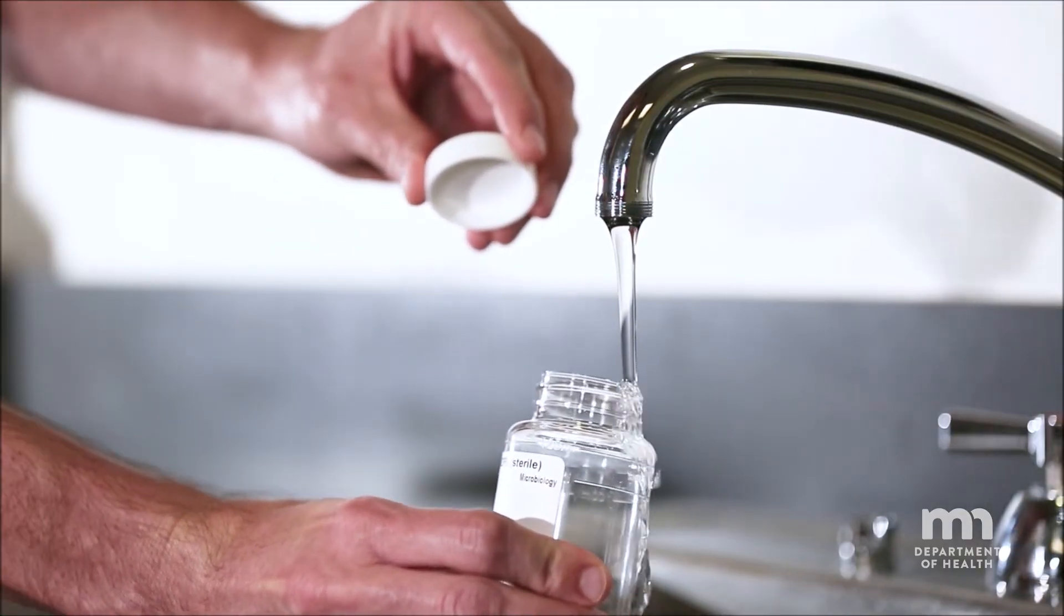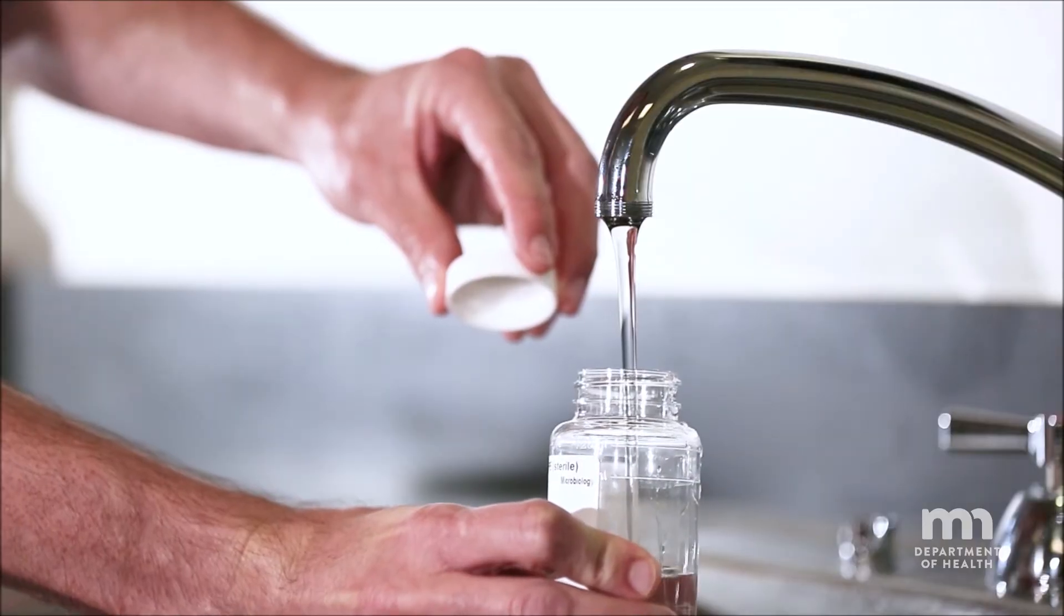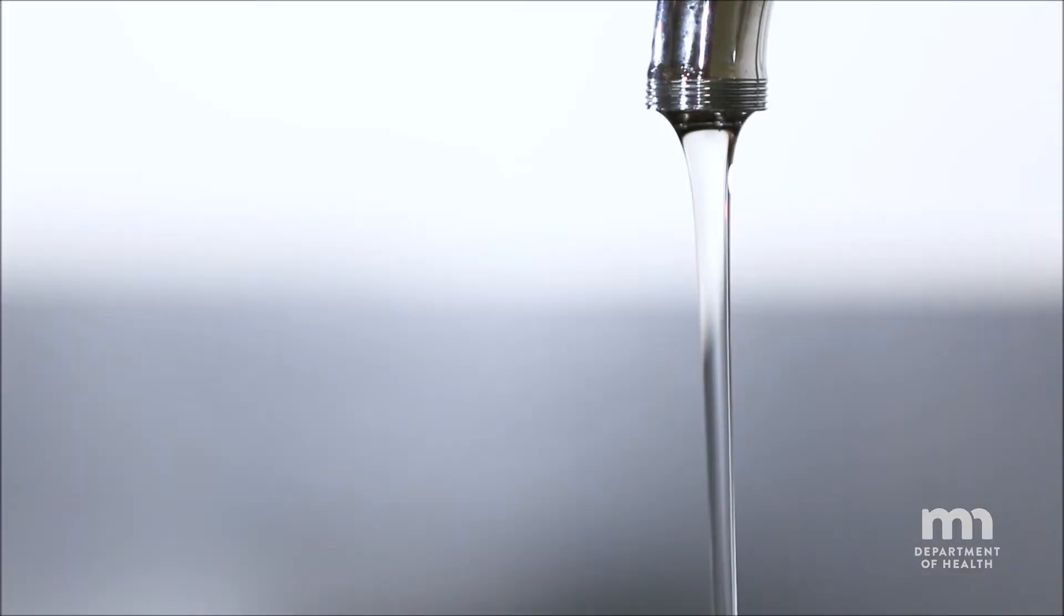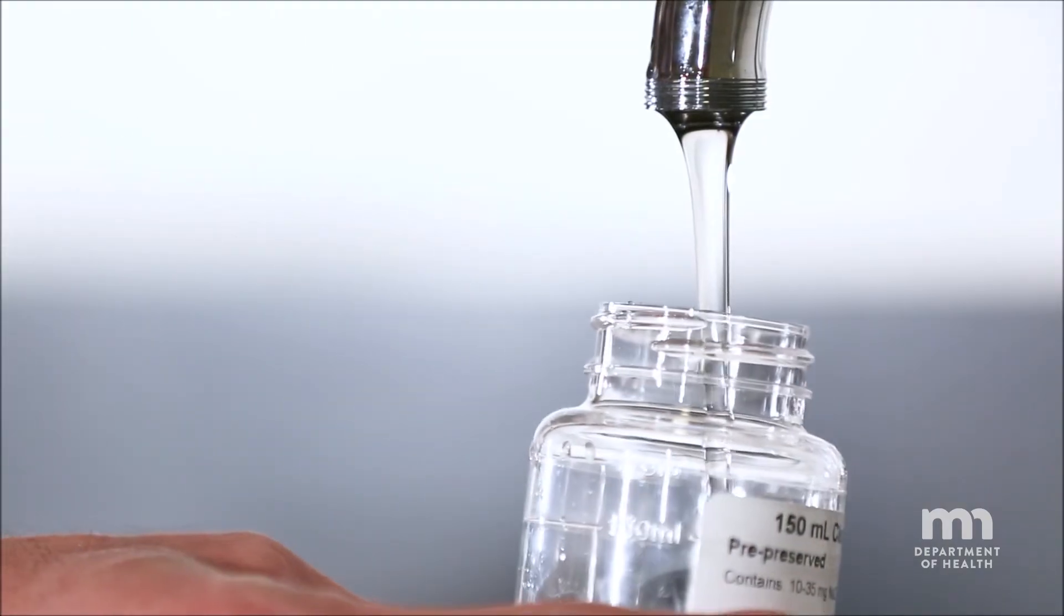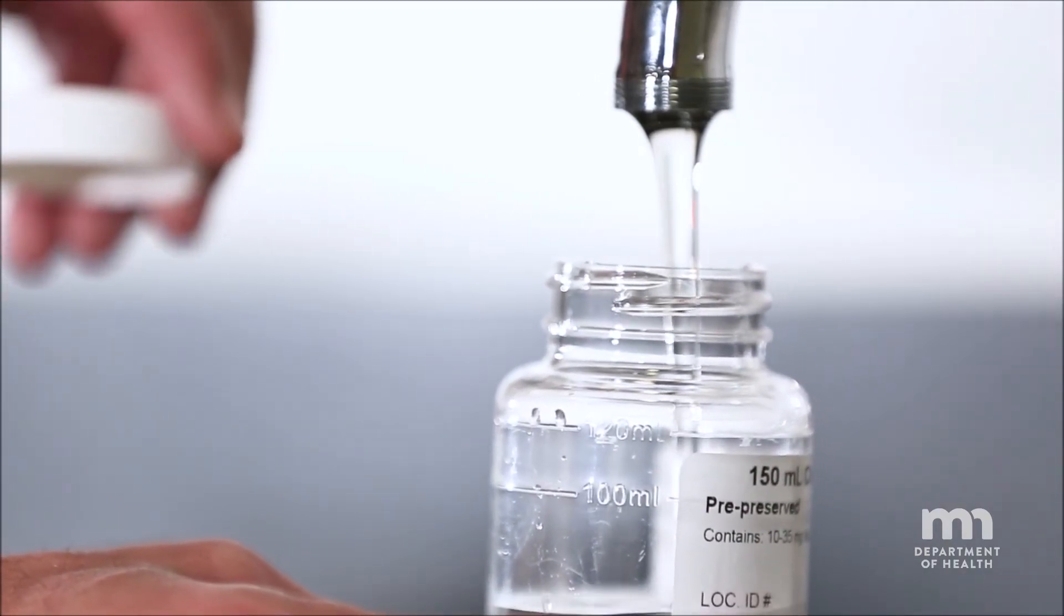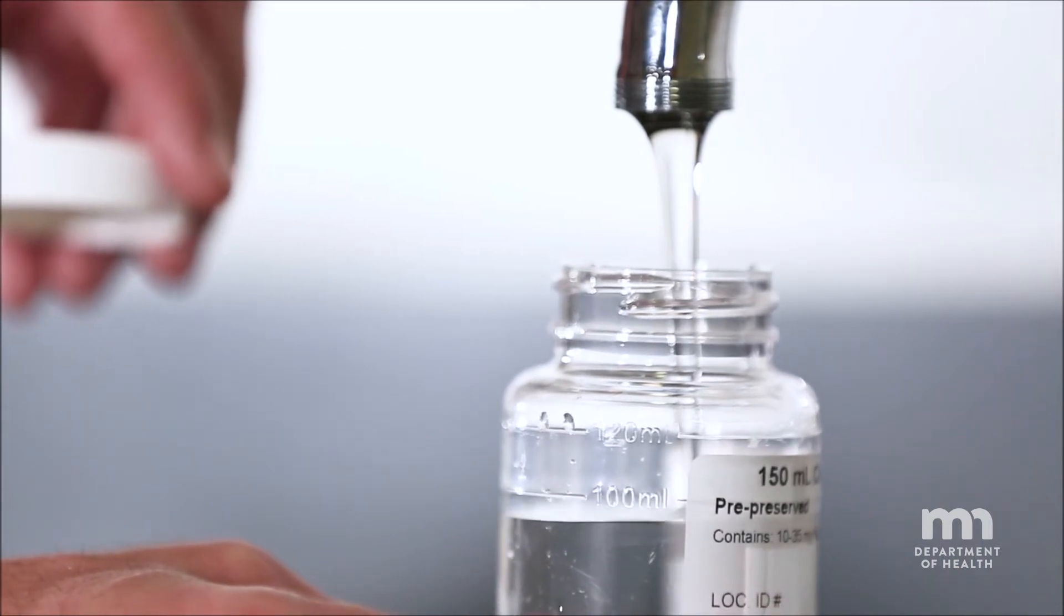Quickly place the bottle under the flowing stream and don't let the bottle touch the faucet or allow water to splash up onto the faucet. Fill the sample between the two lines on a 150 milliliter bottle. Look at the bottle at eye level to ensure the water is between the two lines.